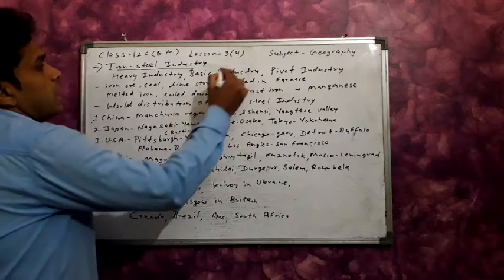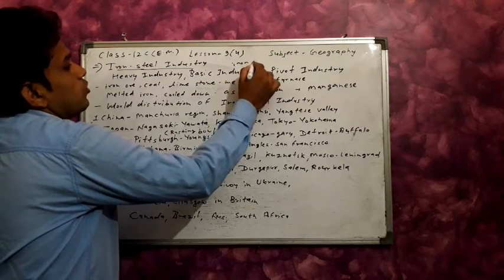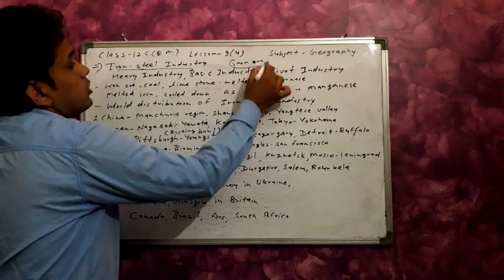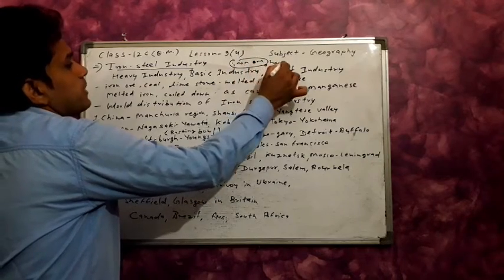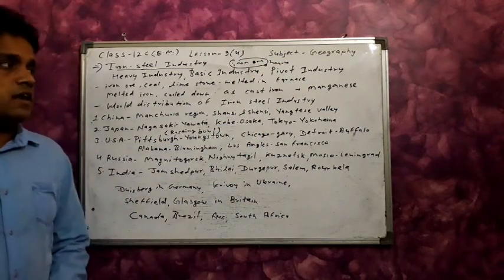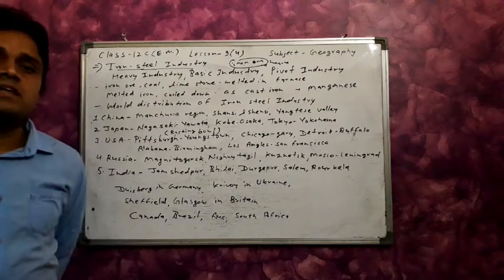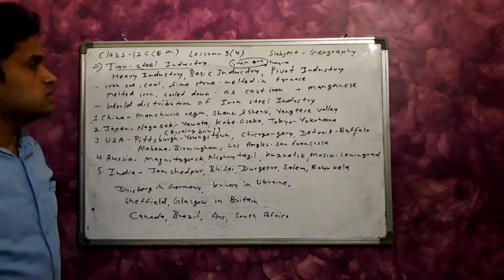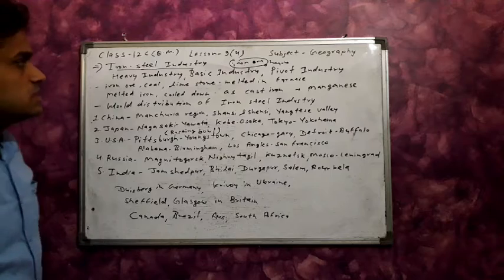In the iron and steel industry, iron ore and coal are used as raw materials. Iron ore is a heavy mineral, so this industry is known as the heavy industry.